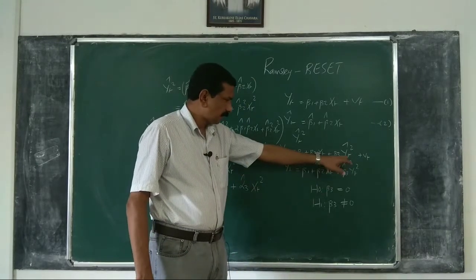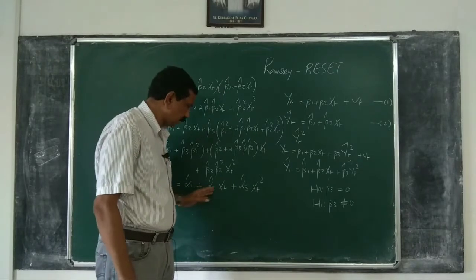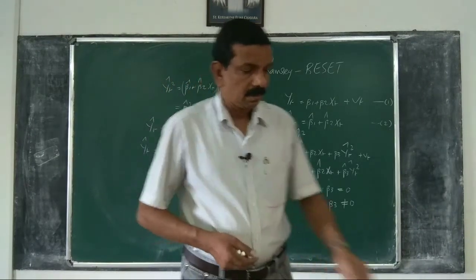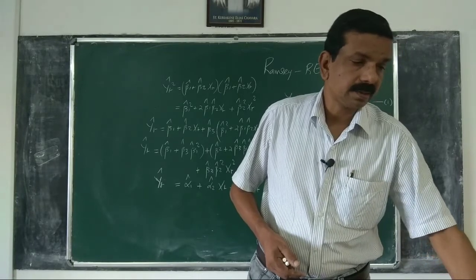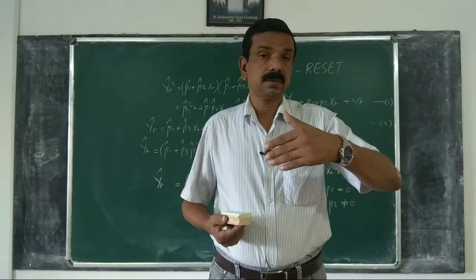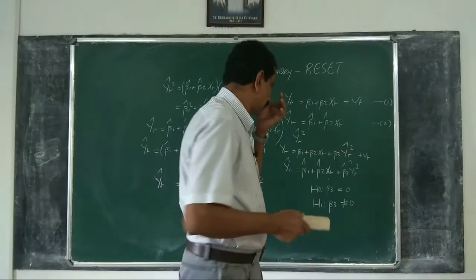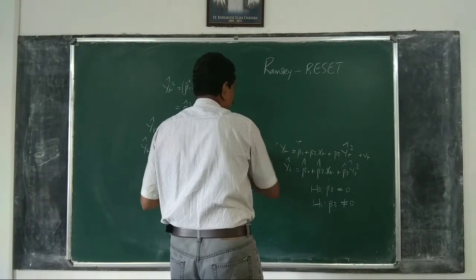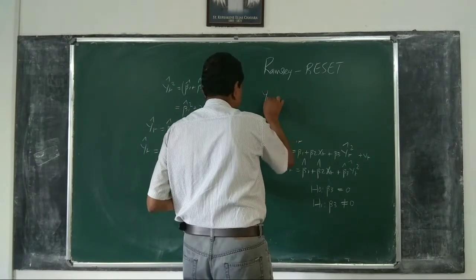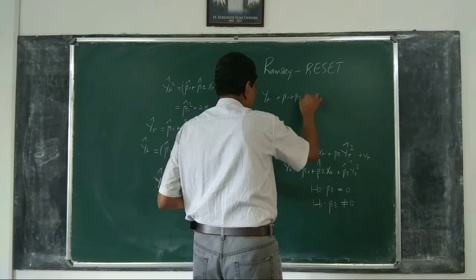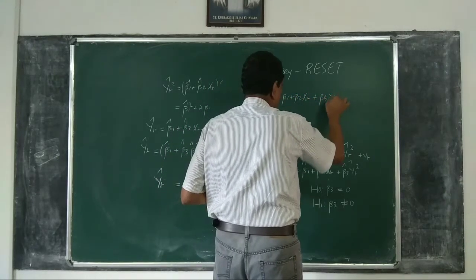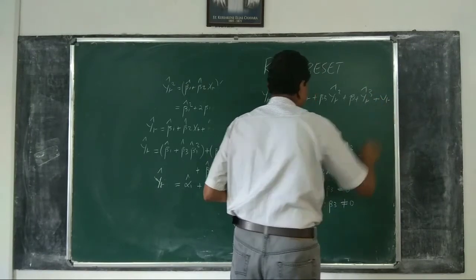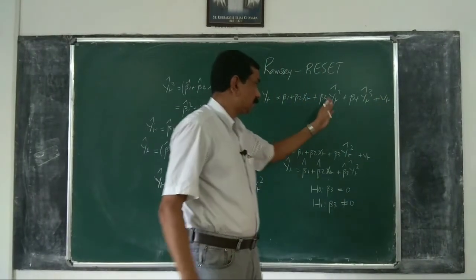Now, when we include Ŷt² only, we are indirectly testing whether Xt² is significant. And if you want to test more than that — that is, if you want to introduce the cube of fitted values — the model becomes: Yt = β₁ + β₂Xt + β₃Ŷt² + β₄Ŷt³ + Vt. That is, we include both the square and the cube of Ŷ.